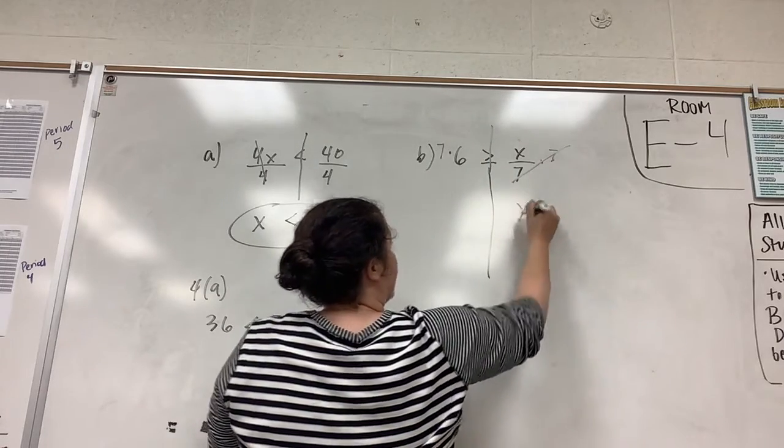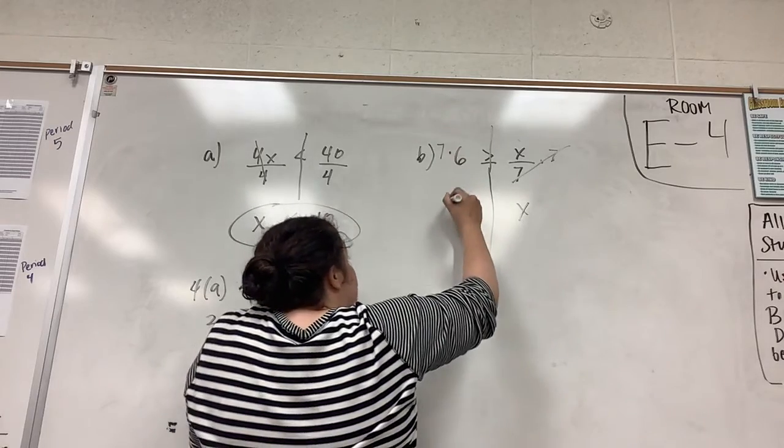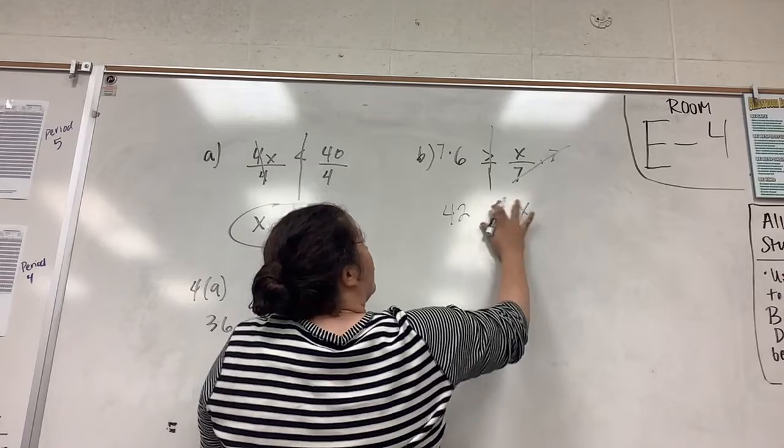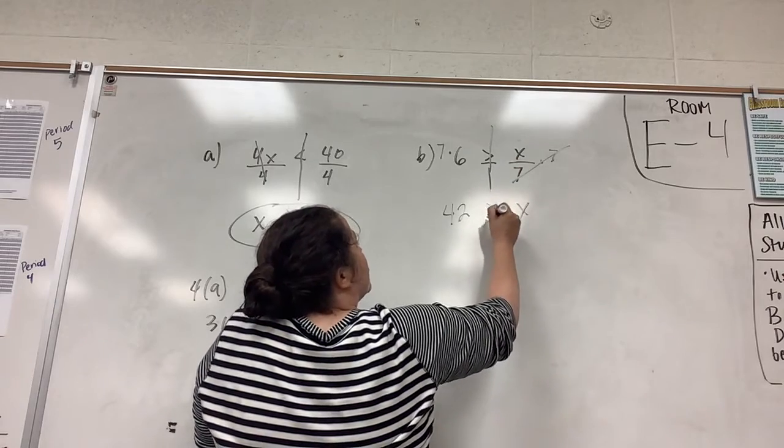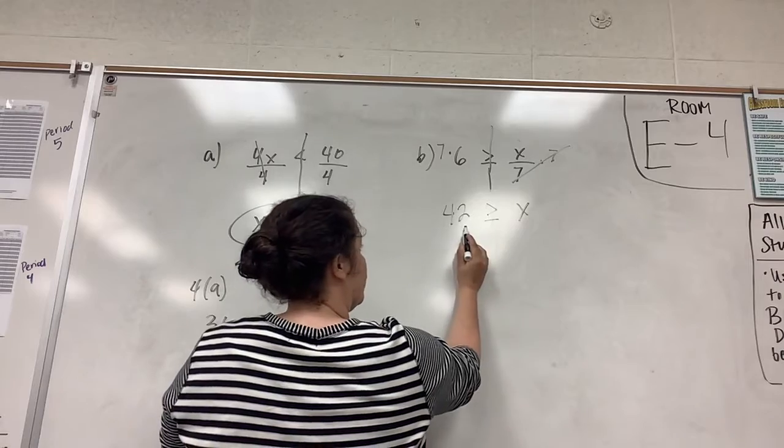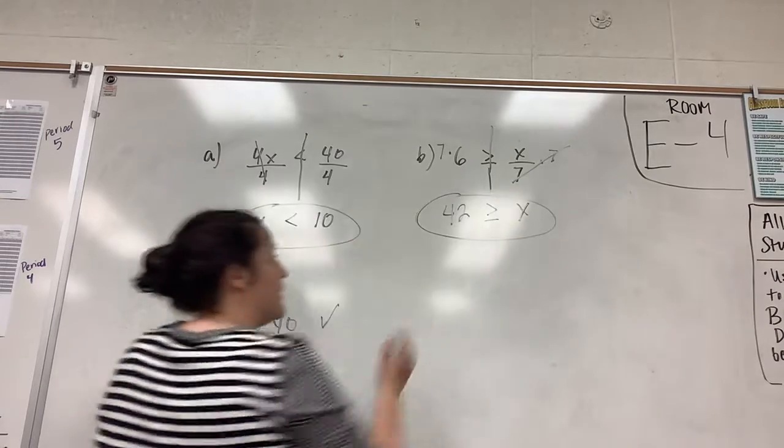The 7s cancel. We're left with x on that side. 7 times 6 is 42, and then we got to keep our symbol. So x is less than or equal to 42. And that is how you solve.